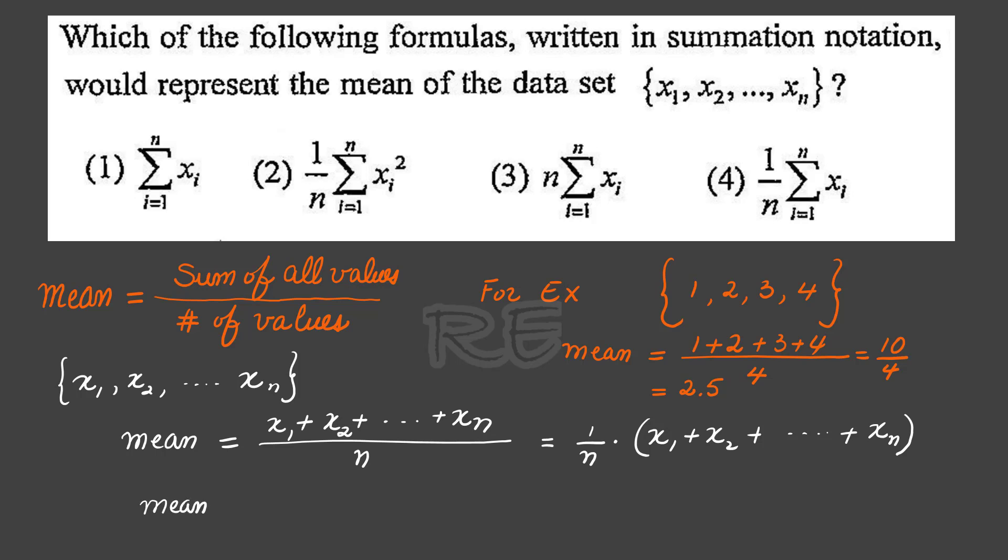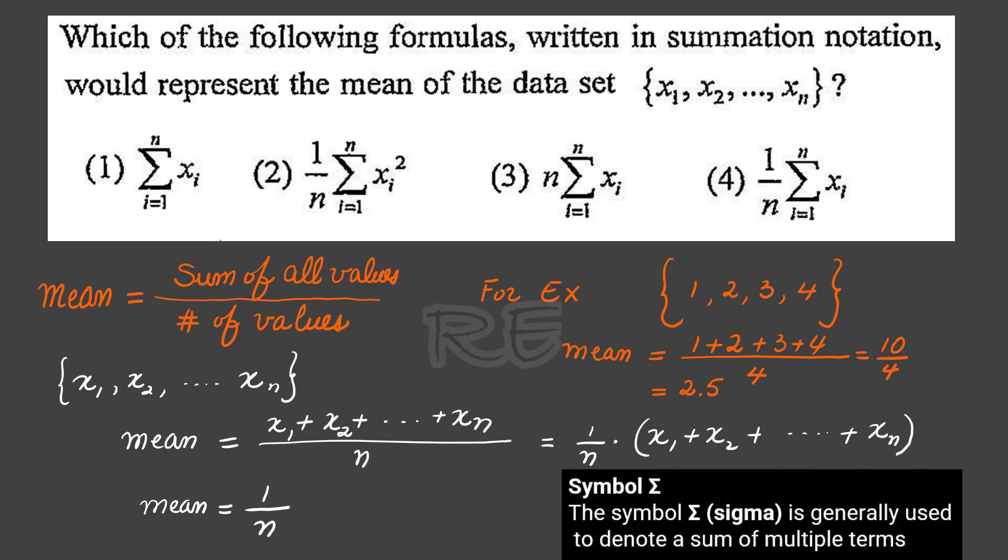The mean will be equal to 1 over n, we use the Greek letter, the symbol sigma, to describe the sum of multiple terms. The subscript will run from 1 to n, and we call it i.